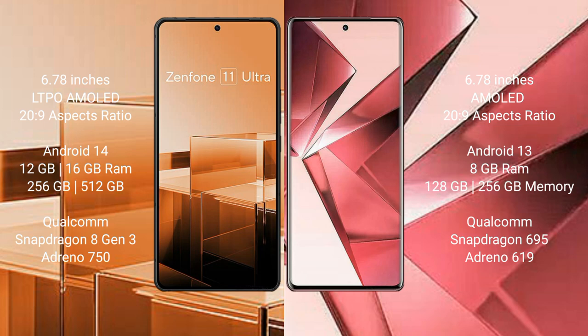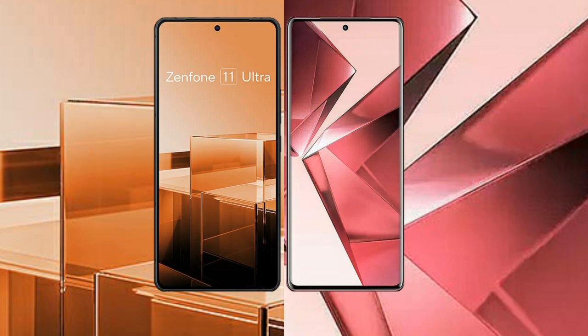The Asus Zenfone 11 Ultra comes with 12GB or 16GB RAM and 256GB or 512GB internal storage, a Qualcomm Snapdragon 8 Gen 3 processor, and Adreno 750 GPU. The vivo V29e comes with 8GB RAM and 128GB or 256GB internal storage, a Qualcomm Snapdragon 695 processor, and Adreno 619 GPU.